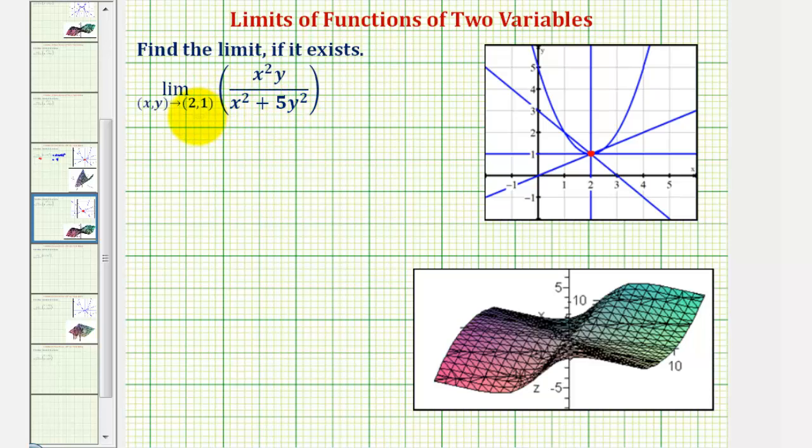For example, notice how at the point (0, 0), we'd have the indeterminate form of 0/0, so we would have to consider various paths approaching the origin if this was approaching (0, 0).